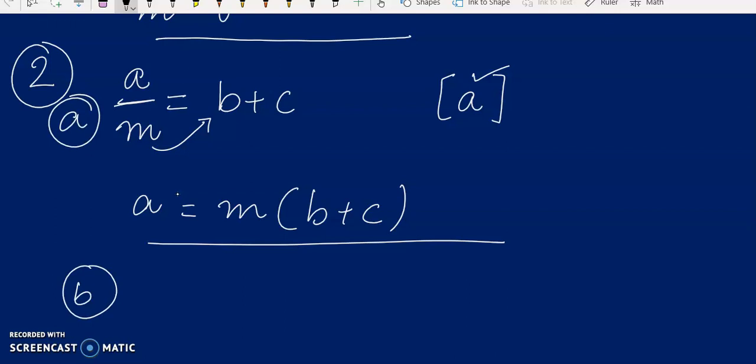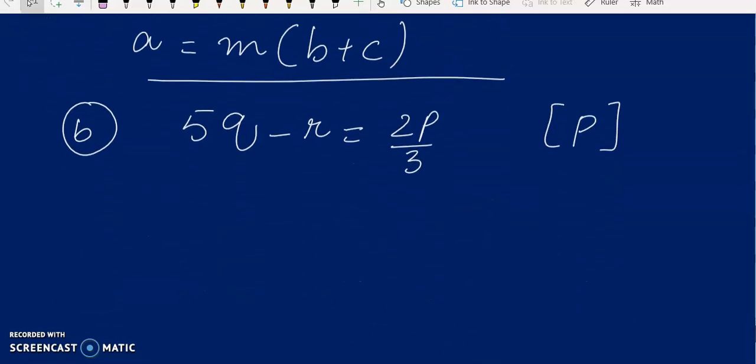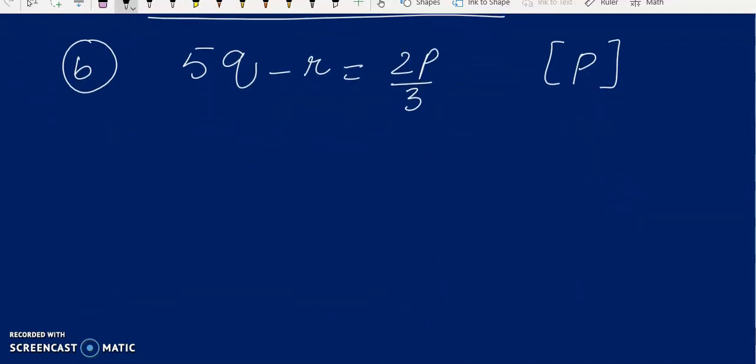Now we do B part. 5Q minus R equals 2P over 3, and here we have to make P the subject of the formula. Now this question is also a very easy question. Look, this is our P, and with it 2 is being multiplied while 3 is being divided.